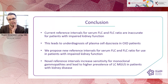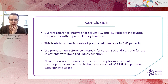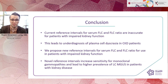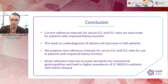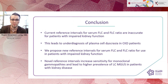The conclusions of our study were that, using this large dataset — the largest on screened individuals with monoclonal gammopathies and estimation of serum free light chains with concurrent kidney function measurement — the current reference intervals for serum FLC and FLC ratio are very inaccurate for patients with impaired kidney function. This leads to under-diagnosis of plasma cell dyscrasia in CKD patients. Therefore, we propose new reference intervals for serum free light chains and the free light chain ratio that increase the sensitivity for monoclonal gammopathies and lead to a higher prevalence estimate of light chain MGUS in patients with kidney disease.